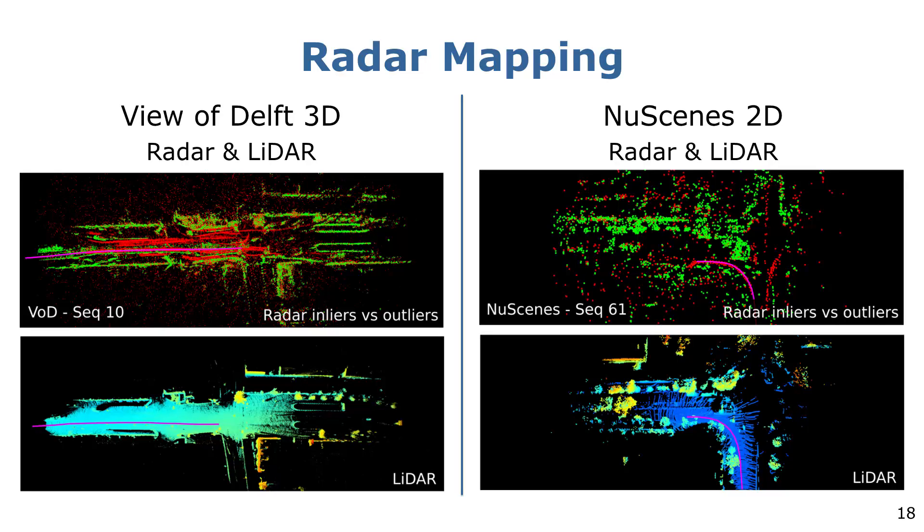Two sequences are shown for the View of Delft and NuScenes datasets, respectively. The outlier points in the map are colored in red and the inliers in green. We observe how the green filtered point cloud has a higher resemblance to the lidar map than the unfiltered one, including all of the outliers.